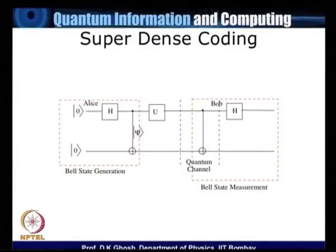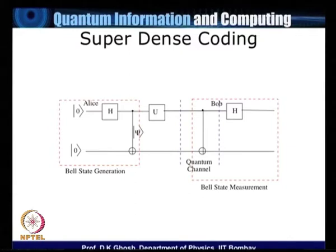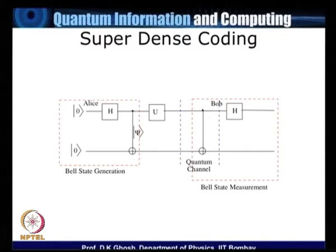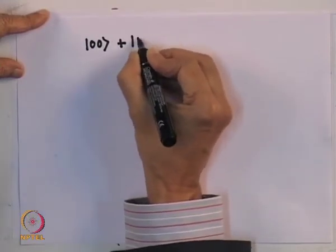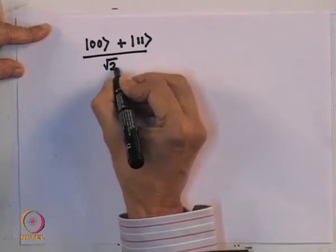This is a schematic of the circuit. The left-hand part enclosed in the red dotted rectangle is simply showing how a Bell state is generated — you start with the two states |00⟩, apply a Hadamard followed by a CNOT. So the left-hand side is just Bell state generation. Alice and Bob now have their bits entangled; we have taken the shared entangled state to be (|00⟩ + |11⟩)/√2.